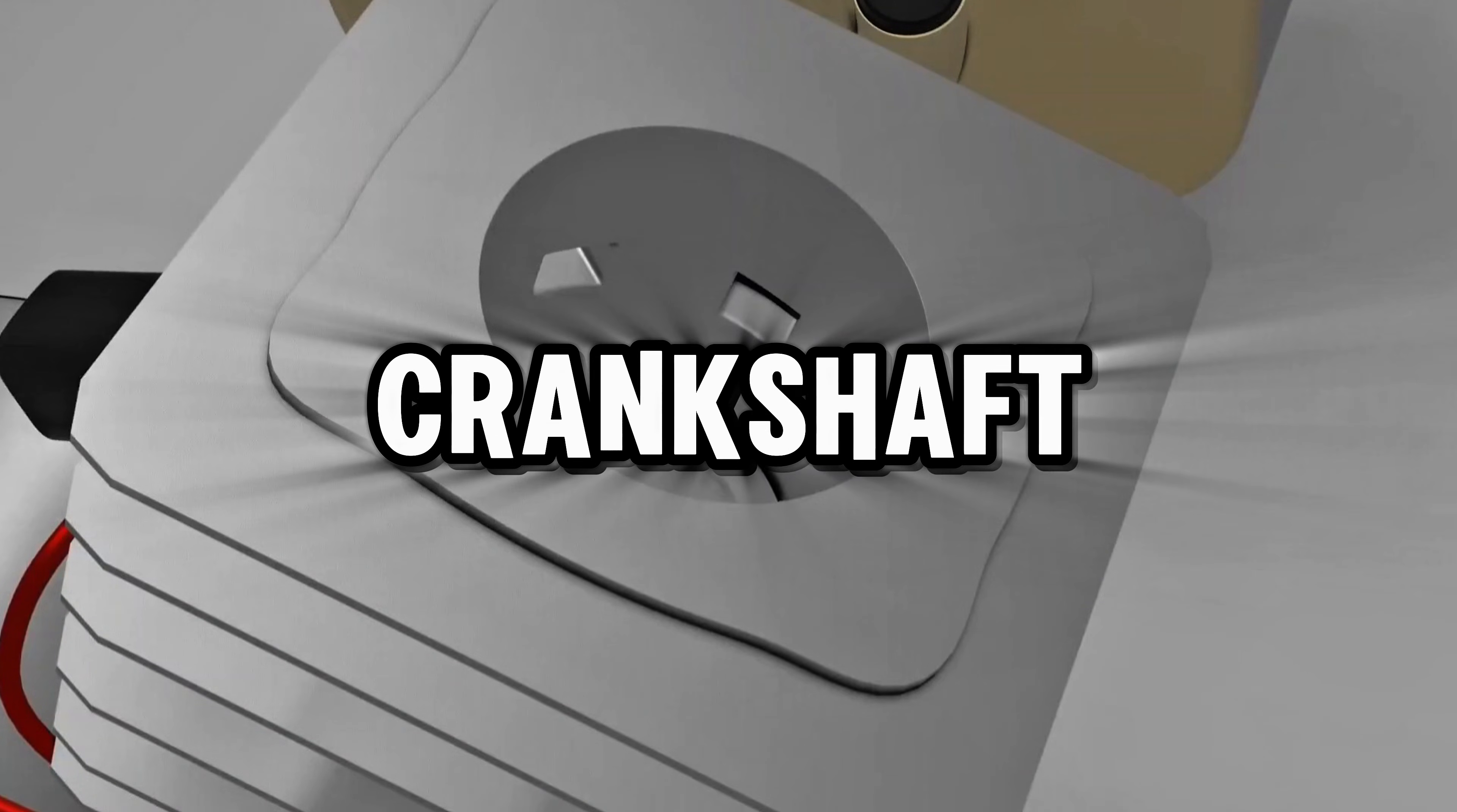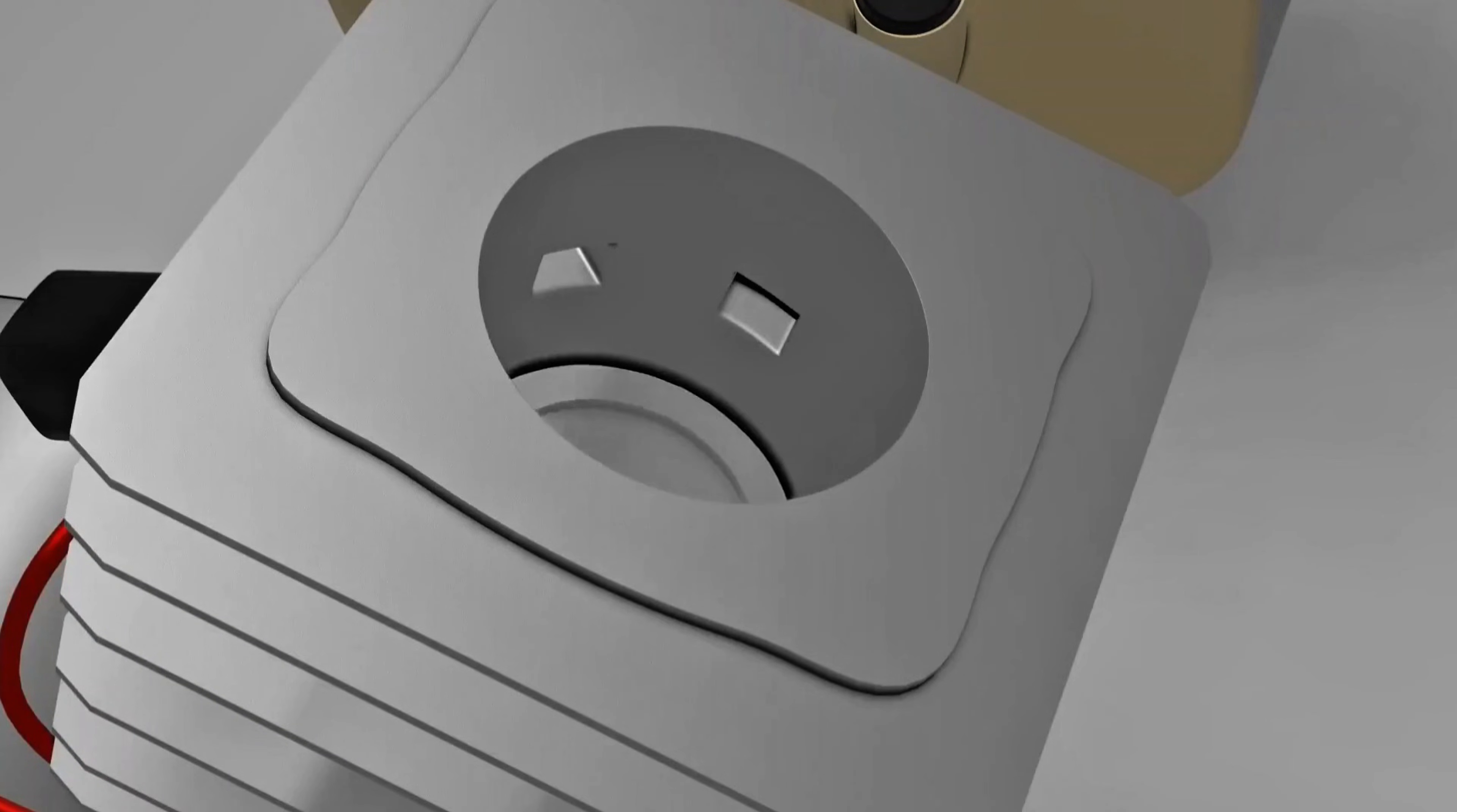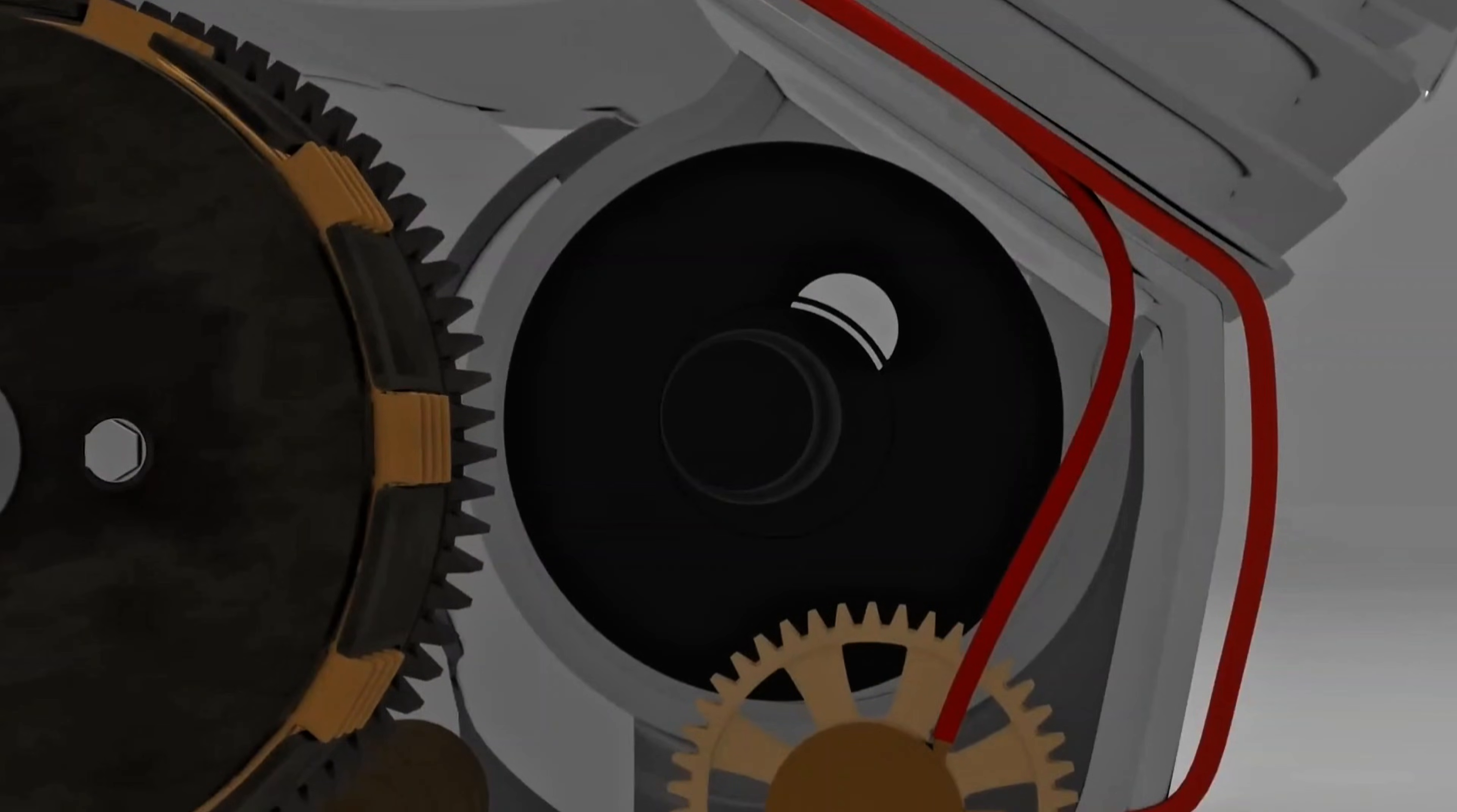But of course, the crankshaft and cylinder still require lubrication. That's why a secondary lubrication system, known as side oil, is used. This oil is specifically designed to lubricate the cylinder and crankshaft.